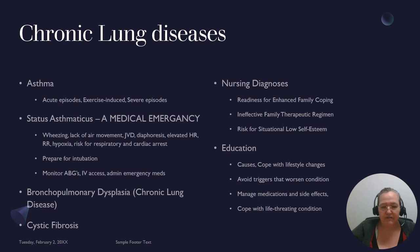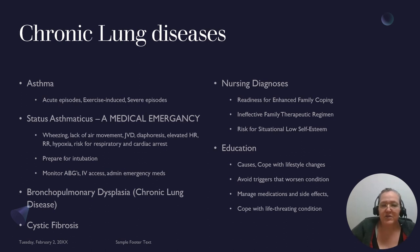Bronchopulmonary dysplasia, also called chronic lung disease, generally occurs in premature children who have been ventilated. Ventilation causes scar tissue to form in the lungs, making them less compliant — they don't stretch as well. These children are at high risk for future respiratory problems, get sick more easily and frequently, and have longer recovery times from respiratory illnesses.